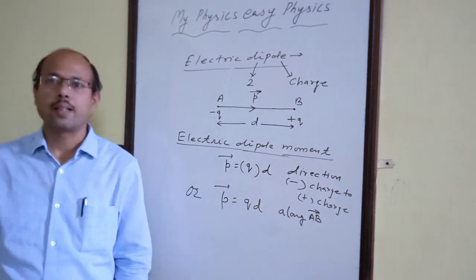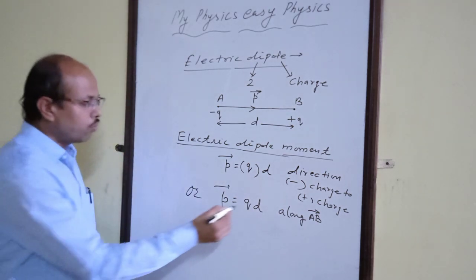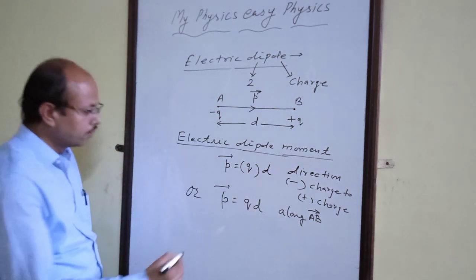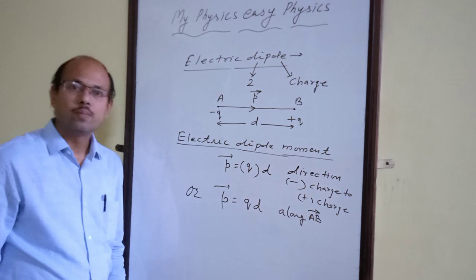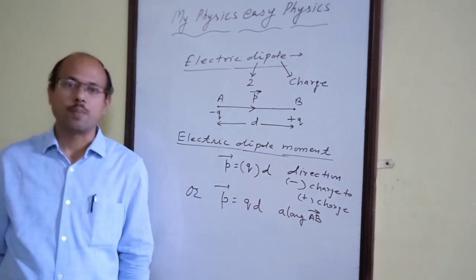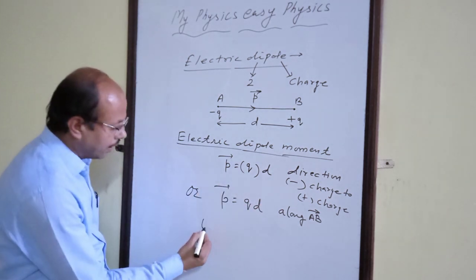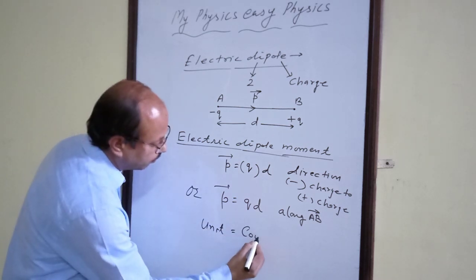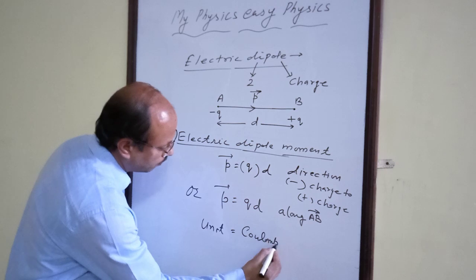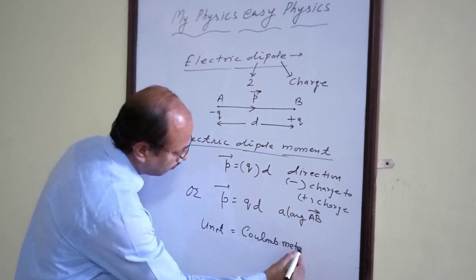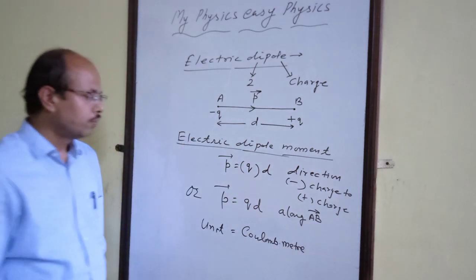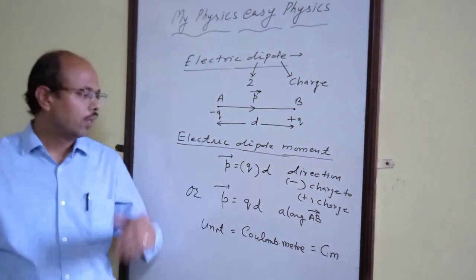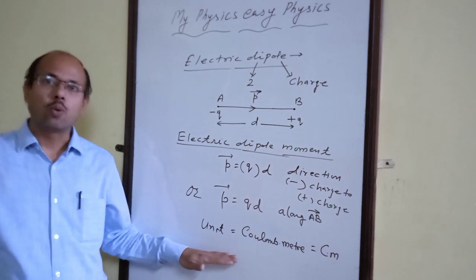This is the direction of electric dipole moment. Now from this formula, we can find the unit of electric dipole moment. Since the unit of charge is coulomb and the unit of distance is meter, the SI unit of electric dipole moment will be coulomb meter.